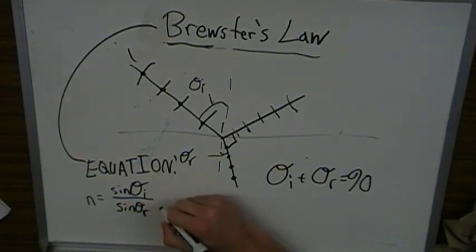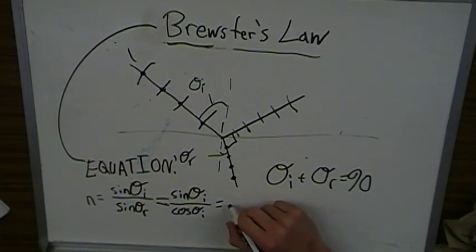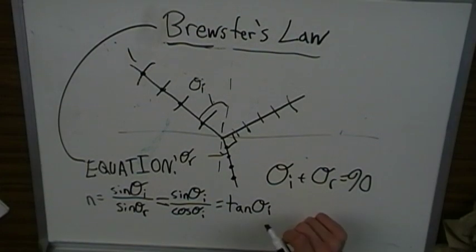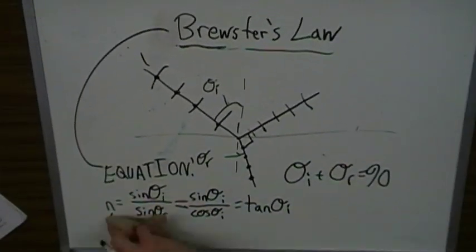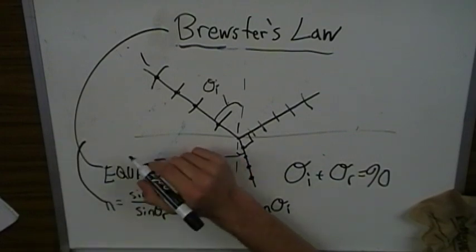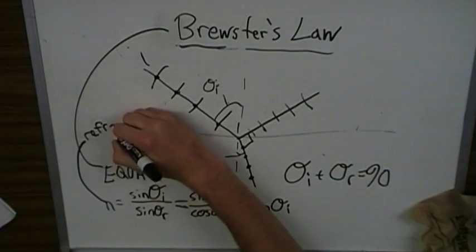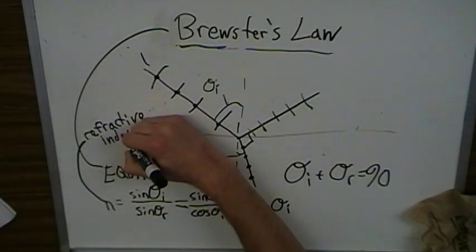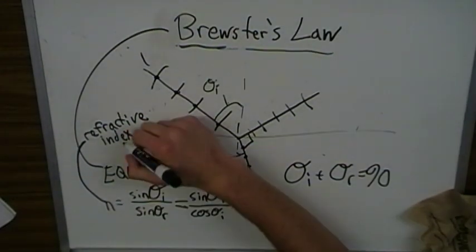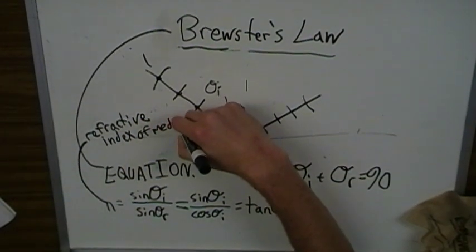The equation for this is sine theta of incident over sine theta of refracted is equal to sine theta of incident over cosine theta of incident, which is also equal to the tangent of the angle of incident. And n is the refractive index. So there are many ways of finding the refractive index here.